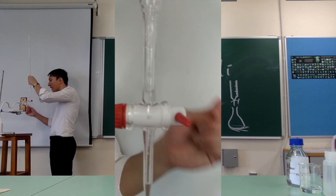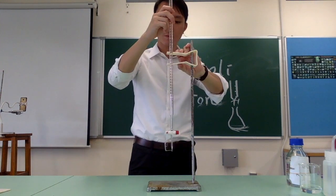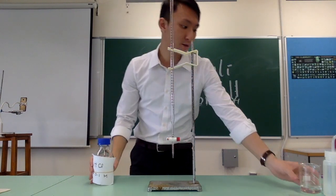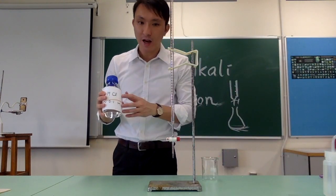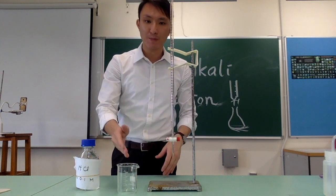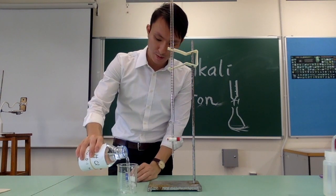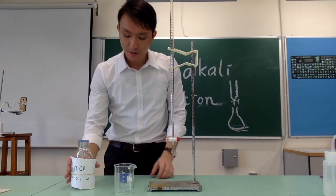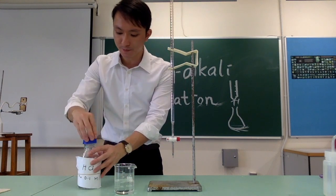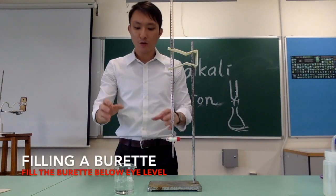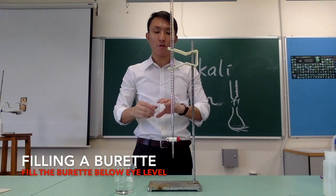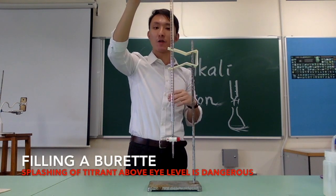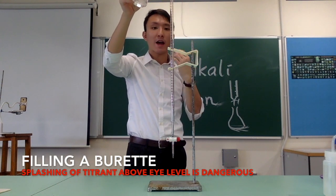Close the valve and proceed to fill the burette with the titrant. Suppose we are adding HCl. First, find a clean beaker, pour a small amount of acid to rinse it, then pour away the washings. Now add a sufficient amount of acid into the beaker. When pouring into the burette, always take the burette down from the clamp first, below eye level, because if the solution splashes while it is above eye level, it may enter your eye and that is very dangerous.